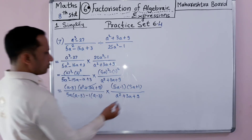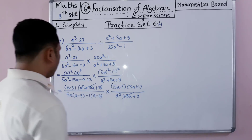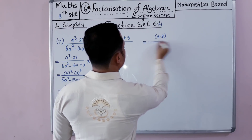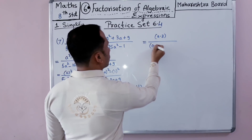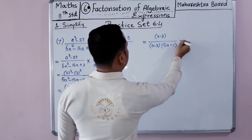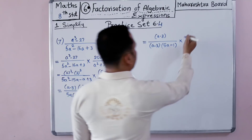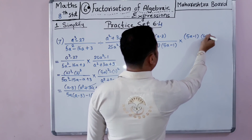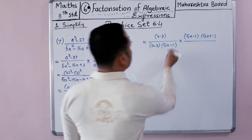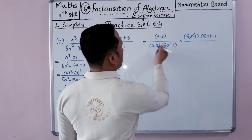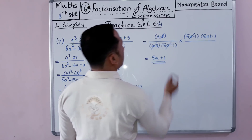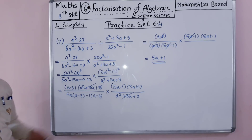Now identifying common factors: a squared plus 3a plus 9 cancels, a minus 3 cancels with a minus 3, and 5a minus 1 cancels with 5a minus 1. The remaining factor is 5a plus 1. So the solution for the seventh equation is 5a plus 1. The method is to write the equation in the proper format, factorize, then cancel common factors to get the solution.